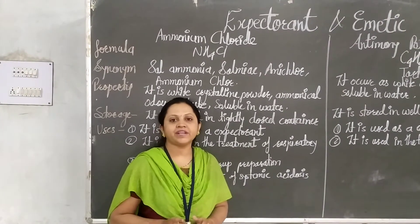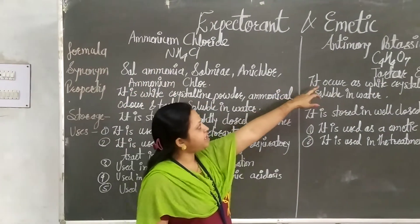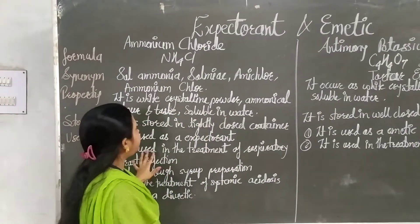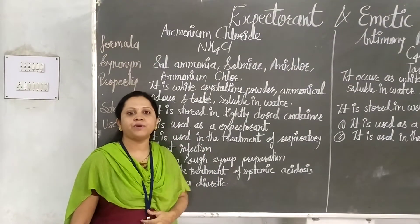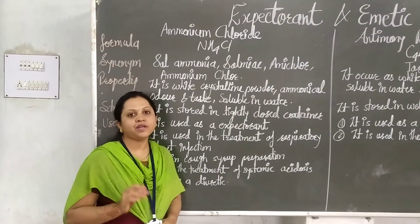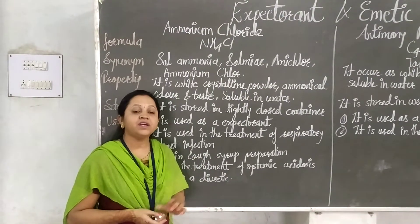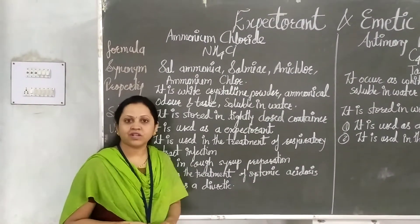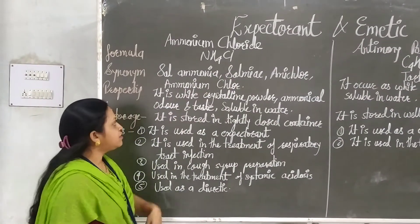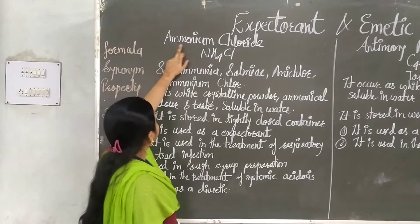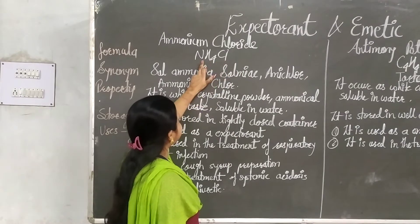Today we are going to see two monographs: first, expectorant — that is ammonium chloride — and the emetic is antimonyl potassium tartrate. Start with ammonium chloride. Ammonium has properties such as smell, odor, and taste. It is soluble in water because it is a chloride salt. The formula: ammonia is NH4 and chloride is Cl, so the complete formula is NH4Cl.